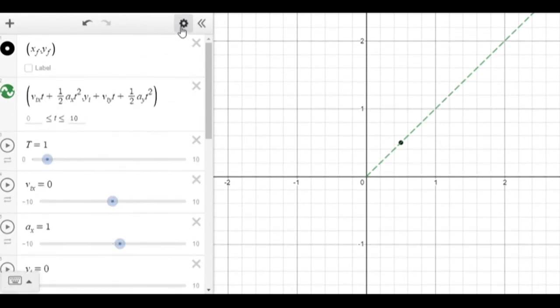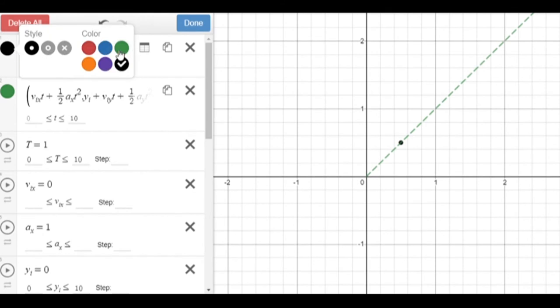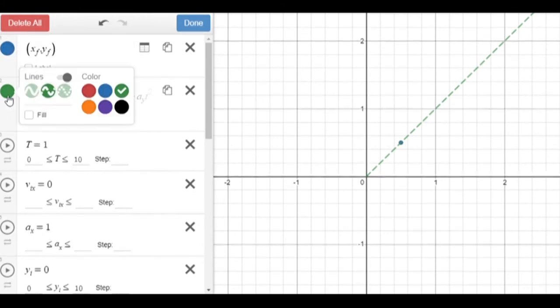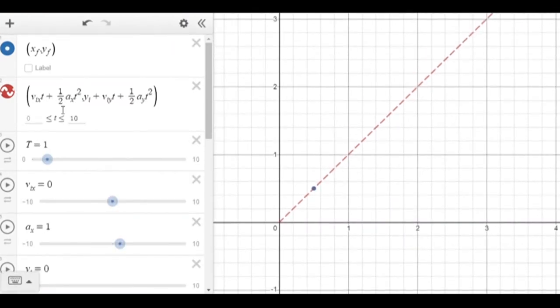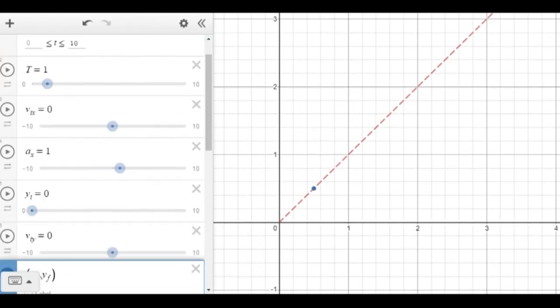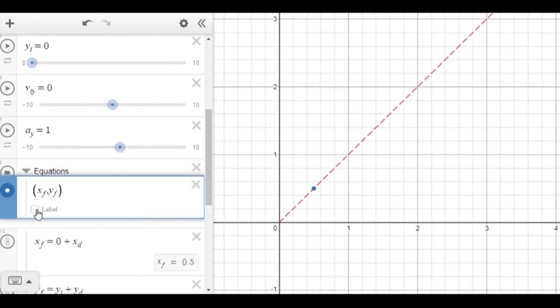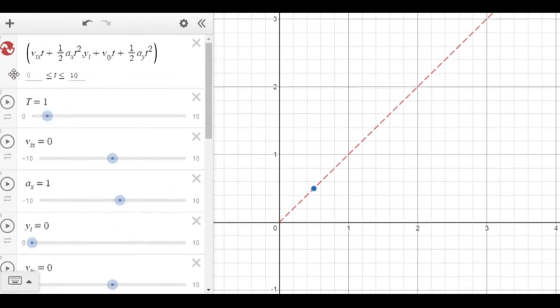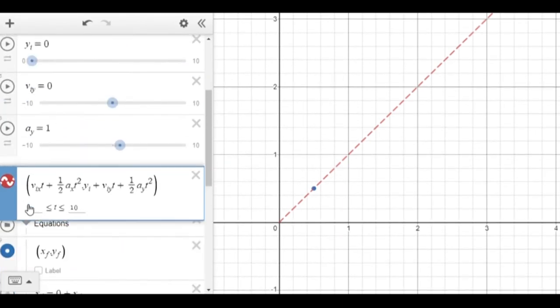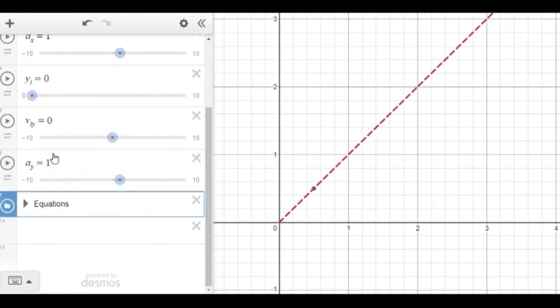And finally I think I'm going to change the colors a little bit. I want this to be blue and I want this to be red. I think that looks nice. And there we have it. I'm going to take these and put them down in my equations folder so we don't have to look at those, and really the only thing we have left are the sliders that we can manipulate. There we go.